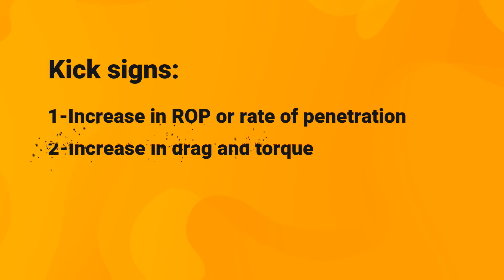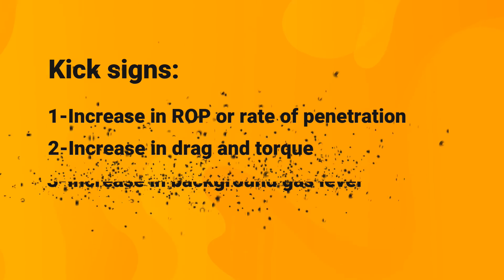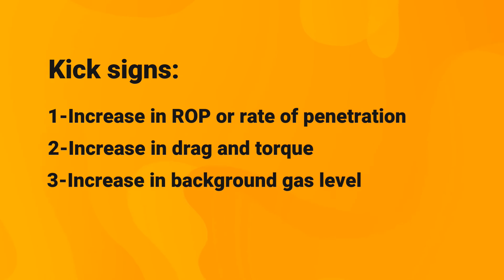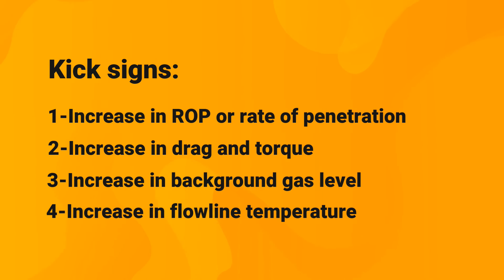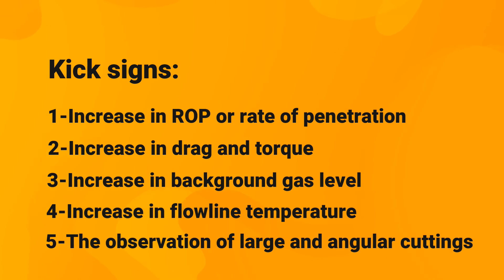Kick sign number two: increase in drag and torque, due to higher ROP and higher generated cuttings. Kick sign number three: increase in background gas level, due to higher formation pressure causing the exit of higher levels of gas during drilling. Kick sign number four: increase in flow line temperature — because heat conductivity of fluid is considerably lower than that of rocks. Since the fluid proportion in abnormal zones is higher, it means lower conductivity of heat from the rock, so heat is stored within the fluids without much dissipation. When the drilling fluid contacts the formation fluid, its temperature increases, causing a subsequent rise in flow line temperature. Kick sign number five: observation of large and angular cuttings on the shale shaker, due to cavings from abnormal zones into the well.